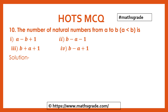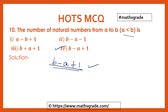Now question number 10: The number of natural numbers from A to B, where A is less than B. B is the greater number and A is the smaller number. The formula is B minus A plus 1. So option 4, B minus A plus 1, is the correct answer.